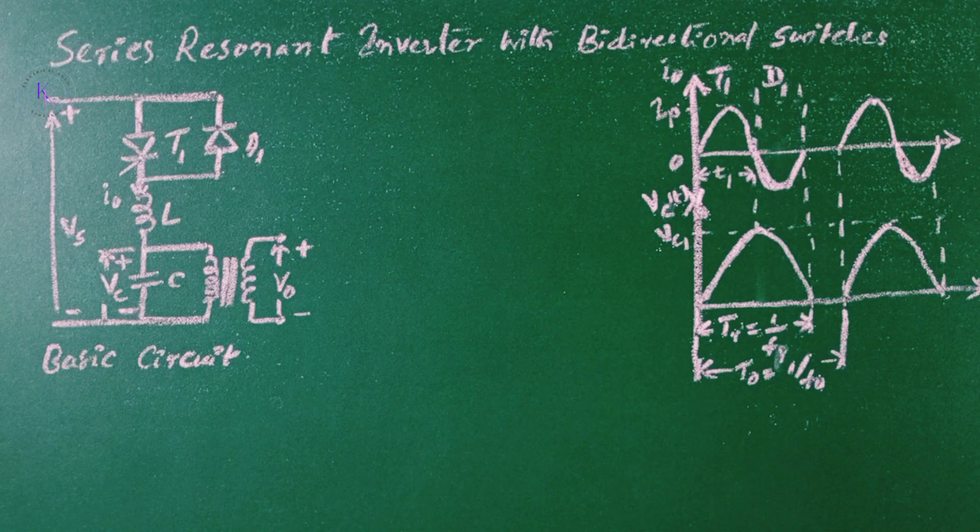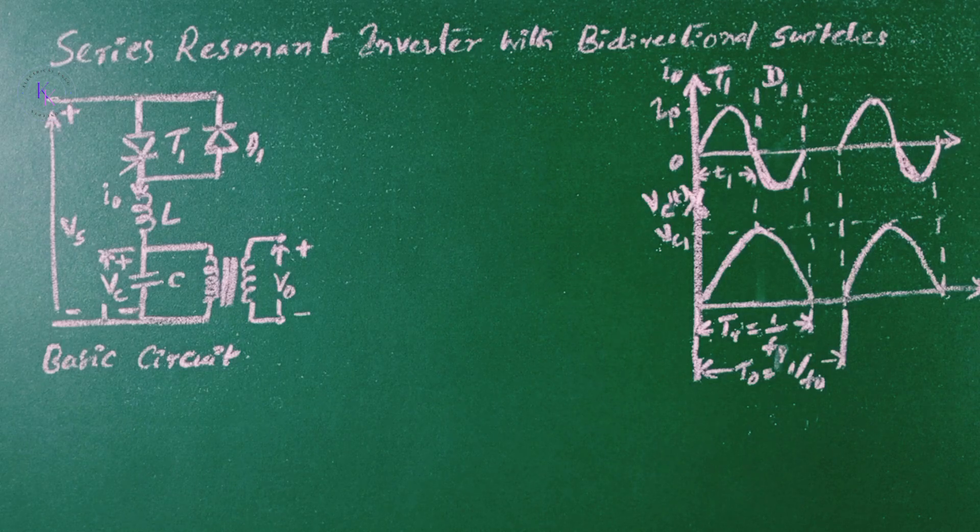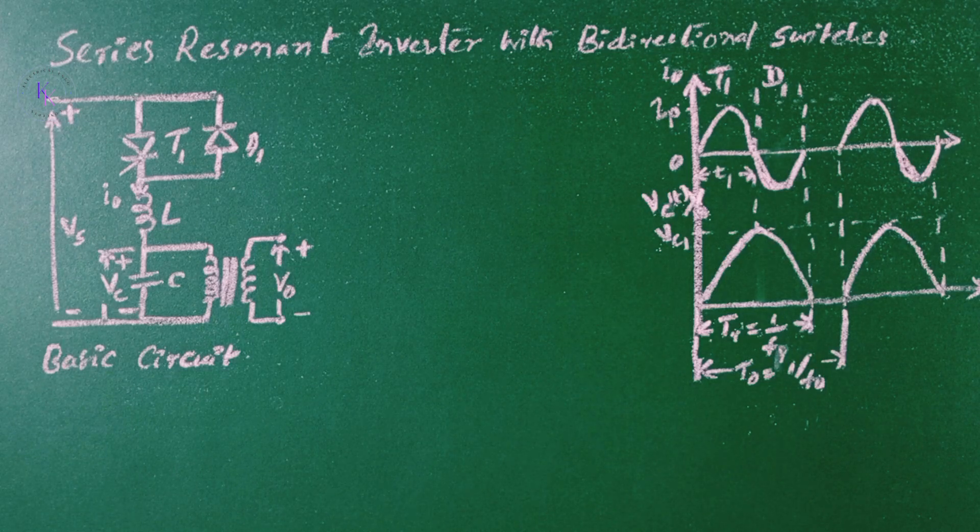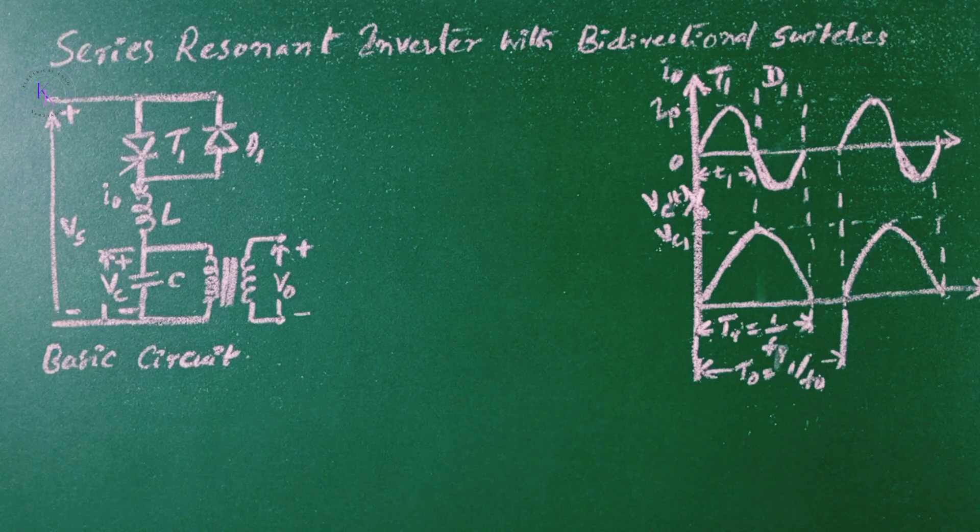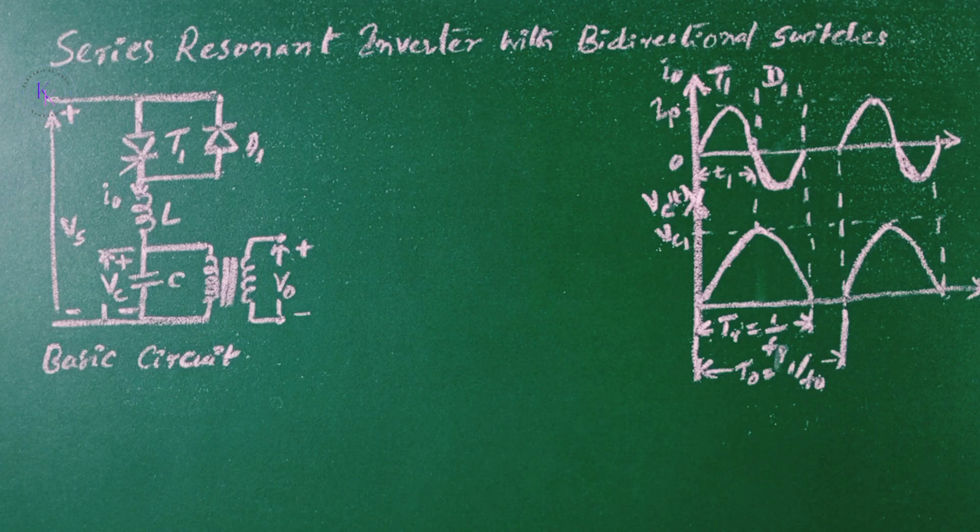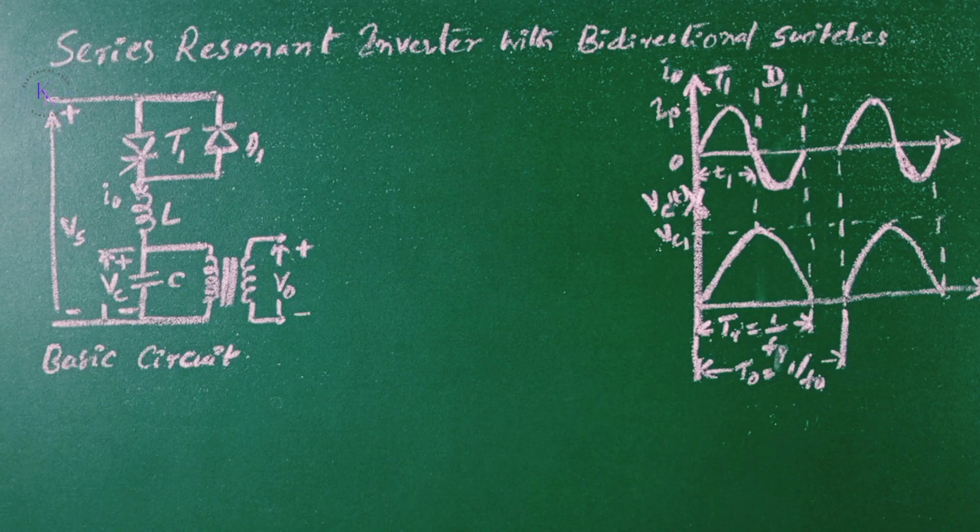Here is a resonant inverter with bidirectional switches. For the resonant inverter with unidirectional switches, the power device has to be turned on in every half-cycle of the output voltage. This limits the inverter frequency and the amount of energy transferred from the source to the load. In addition, the thyristors are subjected to high peak reverse voltage.